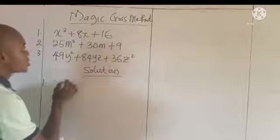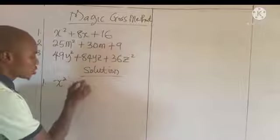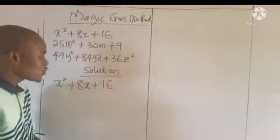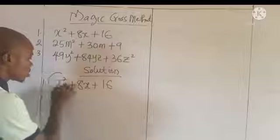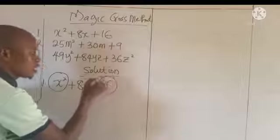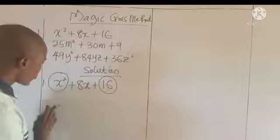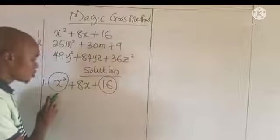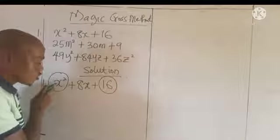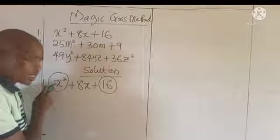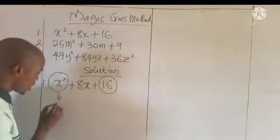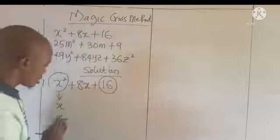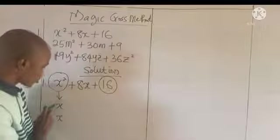We have x squared plus 8x plus 16. First of all, our main focus is the first and the last term. We are going to split the first term into two factors so that when we multiply them, we get x squared. So we have x and x, because x times x gives us x squared.